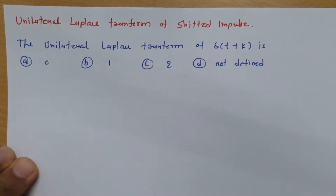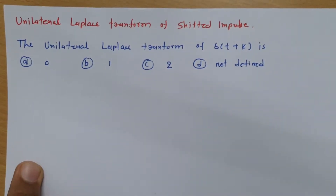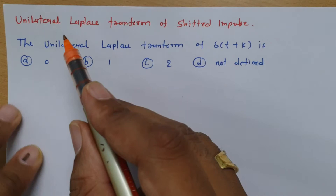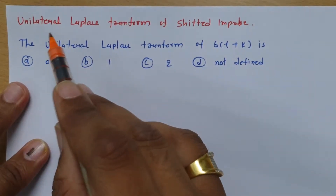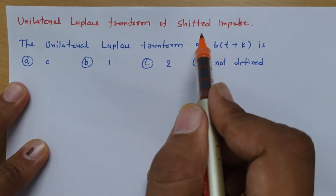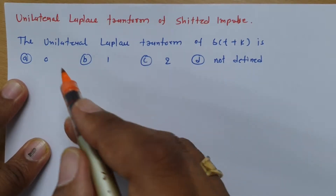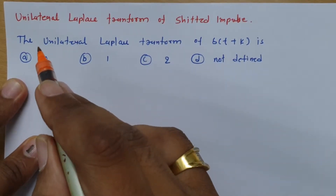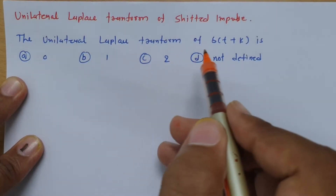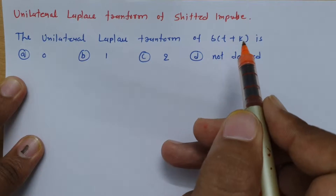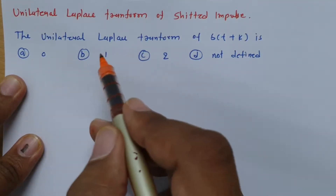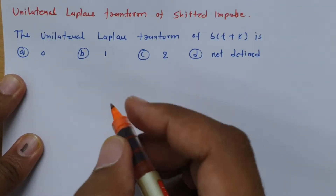Welcome to the signal and system lecture series. In this session, I will explain the unilateral Laplace transform of a shifted impulse. The question is: the unilateral Laplace transform of δ(t+k) is 0, 1, 2, or not defined?